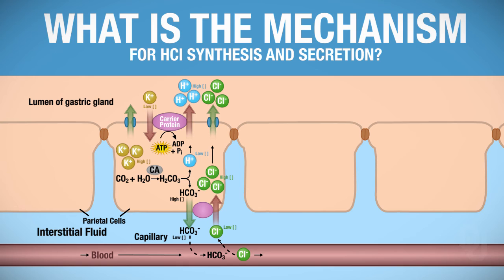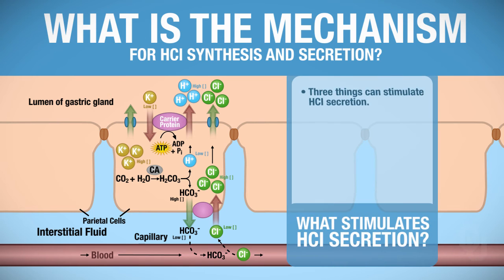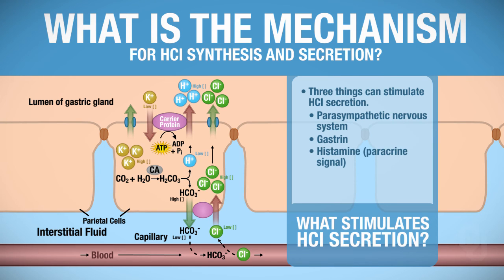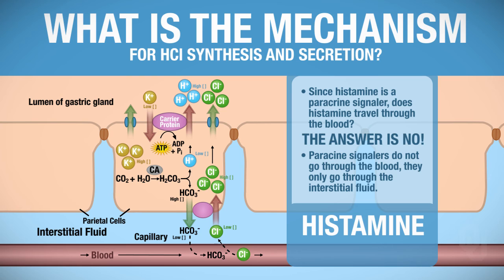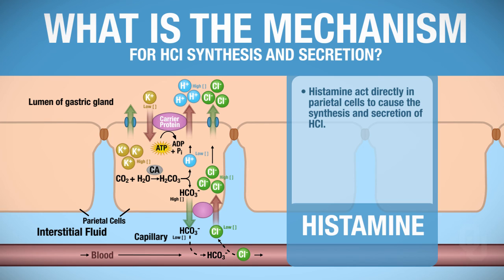We've figured out the mechanism for hydrochloric acid synthesis and secretion. So we should ask, what stimulates HCl secretion? There are three things: the parasympathetic nervous system, gastrin, which is a hormone, and histamine, which is a paracrine signal. Histamine acts directly on parietal cells. Since histamine is a paracrine signaler, does it travel through the blood? No — paracrine messengers do not go through the blood, they only go through the interstitial fluid. We'll discuss the parasympathetic nervous system and gastrin more in just a moment. Histamine acts directly on parietal cells to cause the synthesis and secretion of hydrochloric acid.